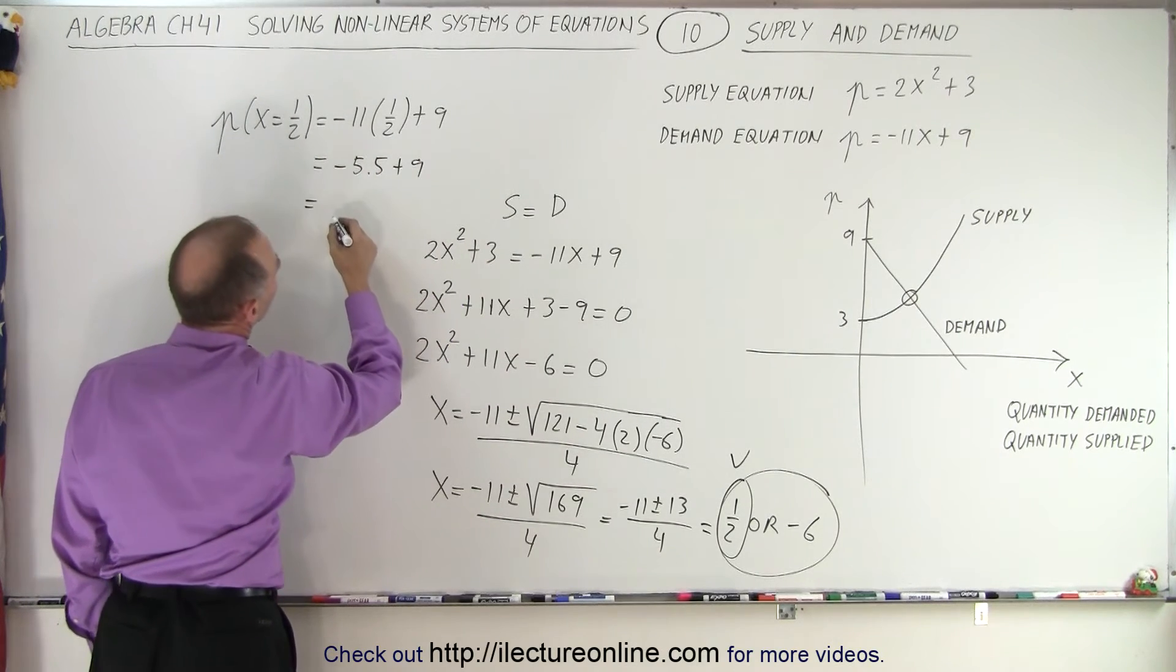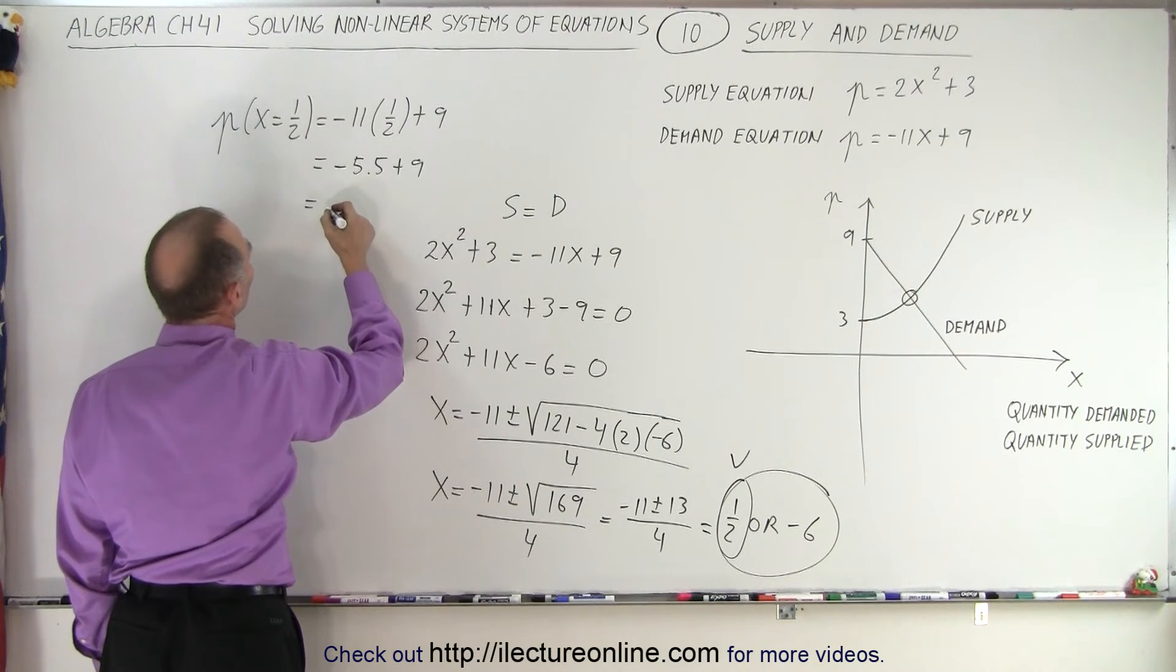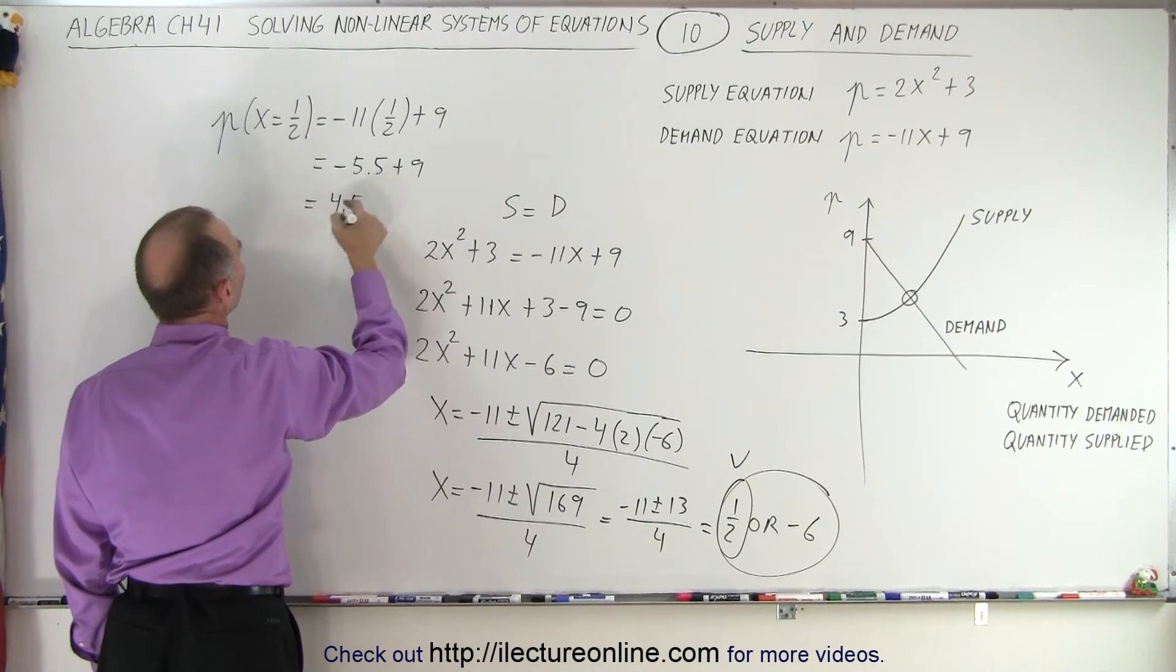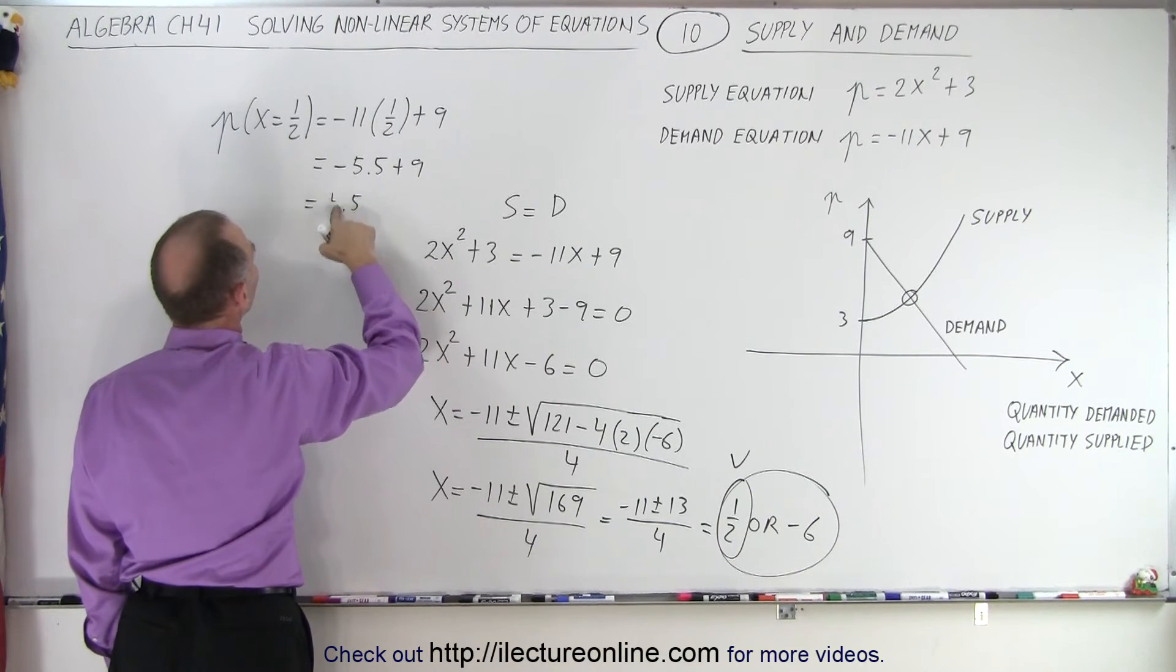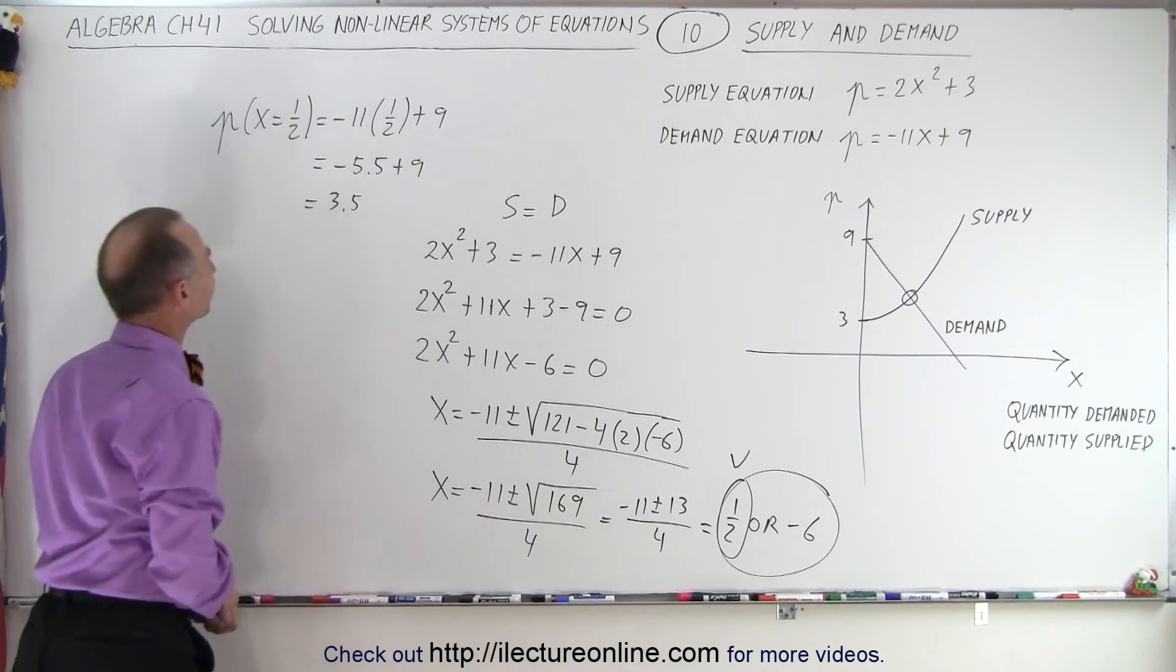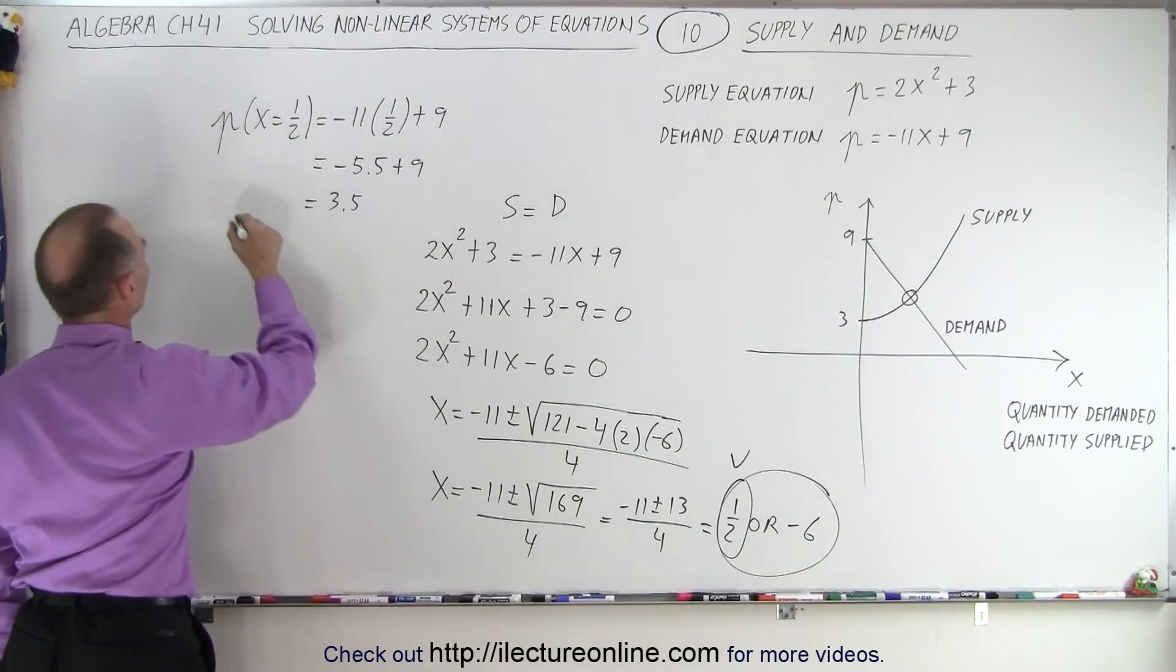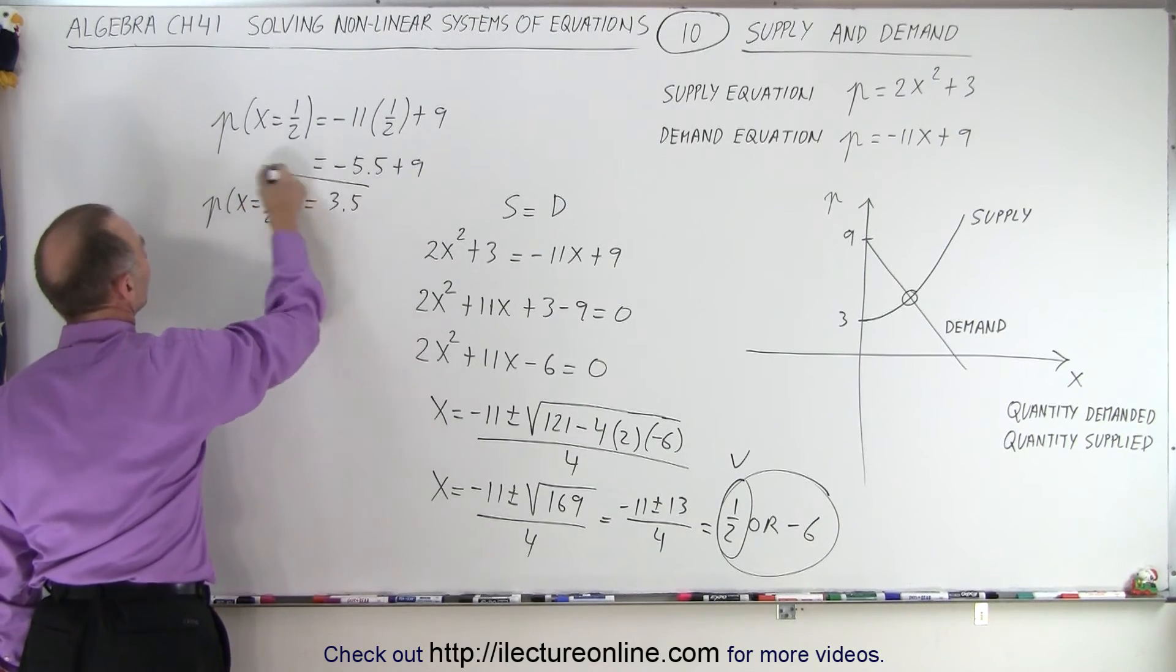Which is equal to, and that would be 3.5. So the price, when X equals 1 half, is equal to 3 and 1 half.